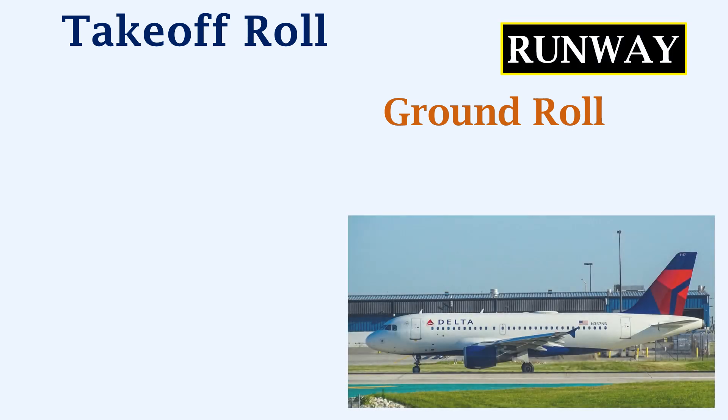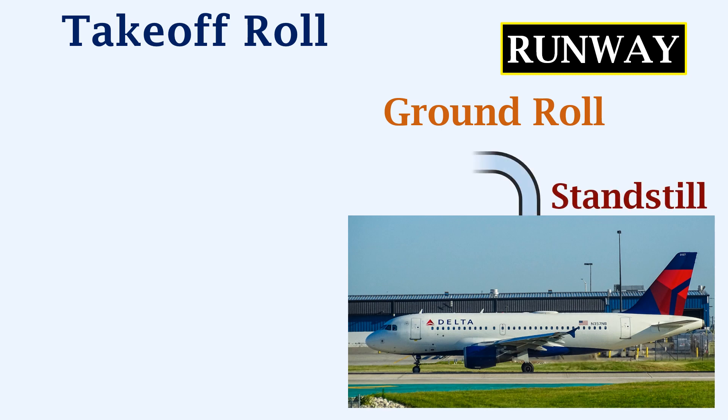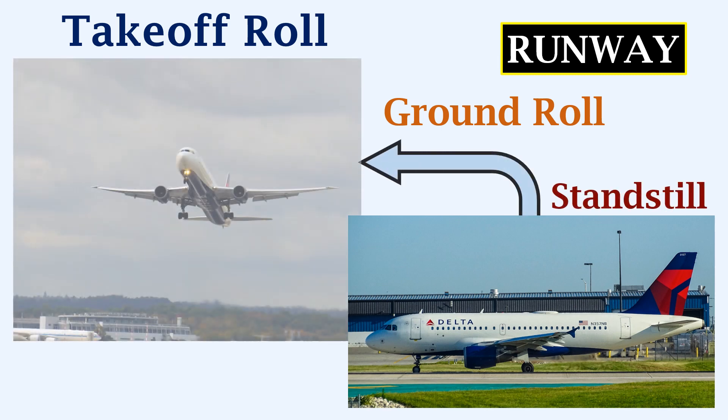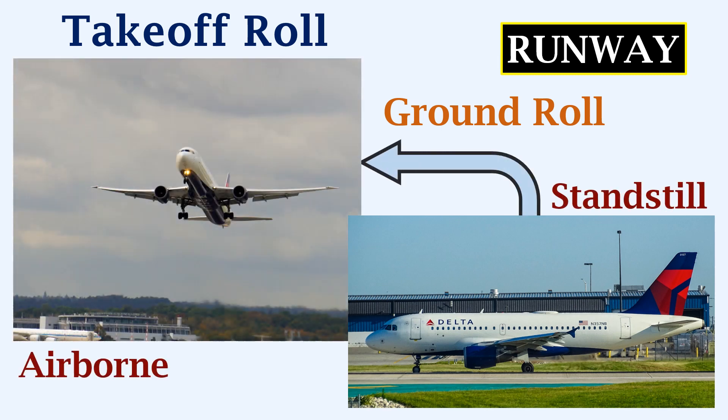Now we will look at the takeoff roll, also called the ground roll, which is the movement of an aircraft on the runway just before takeoff. By definition, the takeoff roll is the part of the takeoff procedure in which the aircraft is accelerated from standstill to a speed at which the aircraft becomes airborne. The takeoff roll begins when the takeoff thrust is applied on the engines.